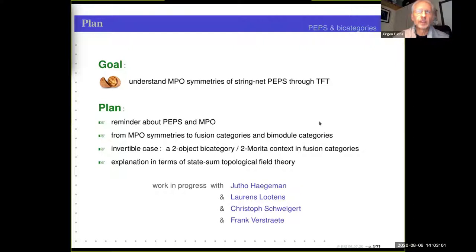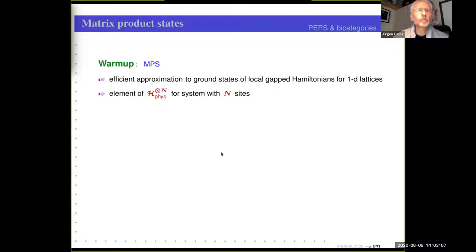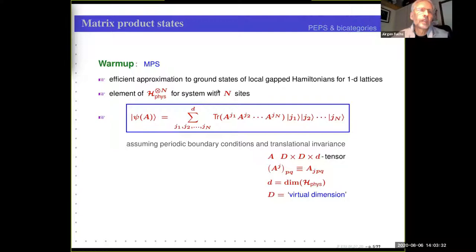So, matrix product states first. They do not appear in the title, but I want to start with them in order to get an explanation of why we talk about PEPS. The MPS case is the one-dimensional case. If you have a gapped Hamiltonian for a one-dimensional lattice with periodic boundary conditions and translational invariance, then we can define certain states which are an efficient approximation for the ground states of those systems as an element of the state space, which is a tensor product of state spaces for each site.